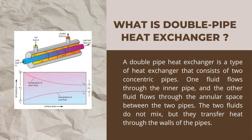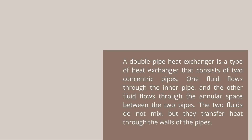A double pipe heat exchanger is a type of heat exchanger that consists of two concentric pipes. One fluid flows through the inner pipe and the other fluid flows through the annular space between the two pipes. The two fluids do not mix but transfer heat through the walls of the pipes. As shown in the photo on the right side, you can see cold fluid going in and warmed water coming out, because of the hot fluid inlet on the shell side transferring heat to the cold fluid.